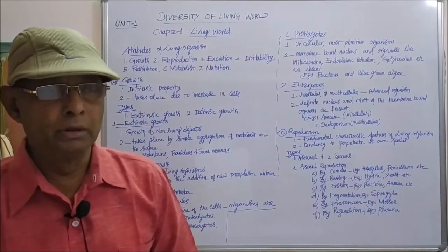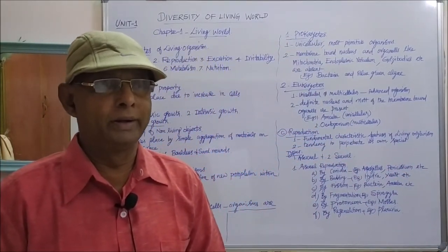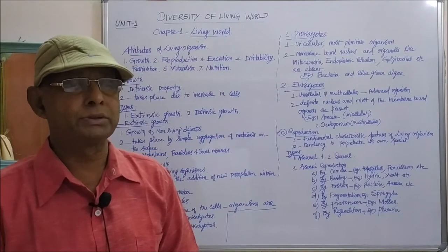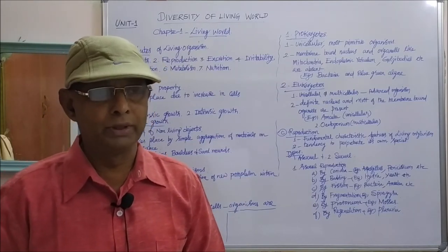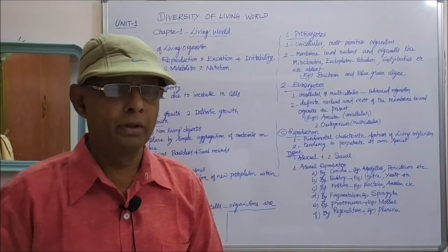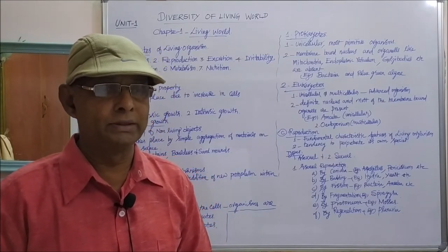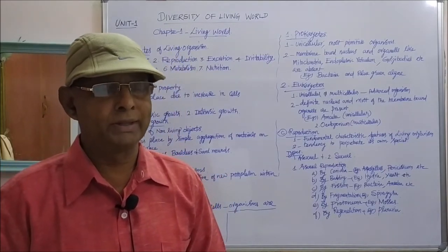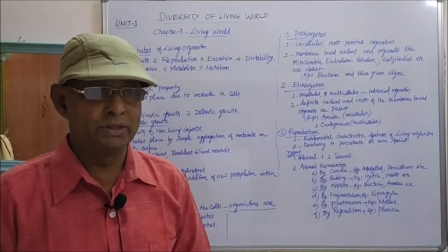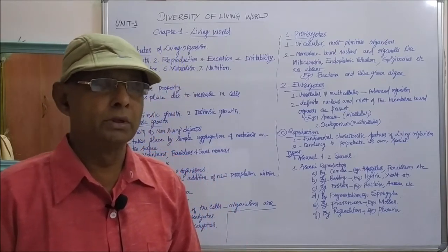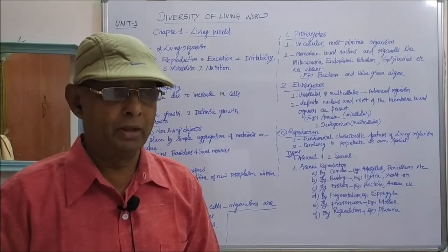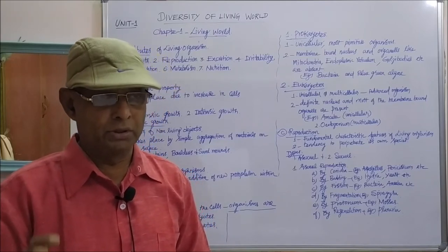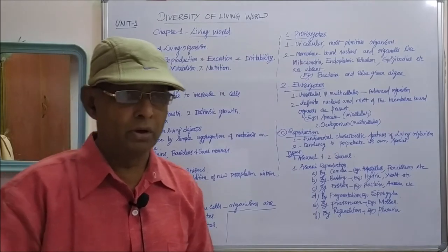Today I am going to cover the diversity of the living world. Earth is a complex structure consisting of both living and non-living things. The complex structure of the earth consisting of living and non-living things is called the biosphere.